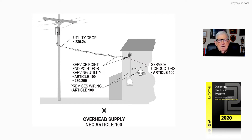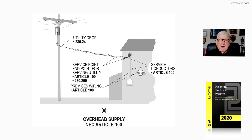Now, basically, it's a service drop if the utility owns the transformer and the distribution lines. If they are owned by the owner, then this would just be considered service conductors that you see from the transformer to the building.